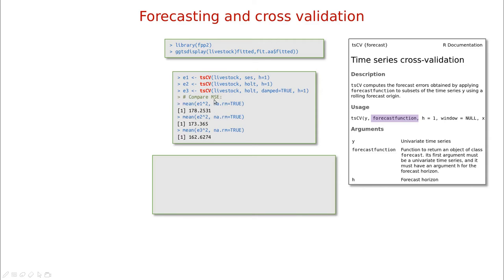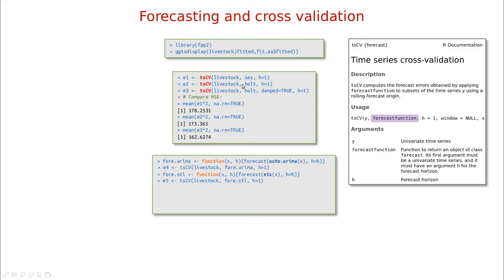Now we can calculate the mean square error — take the mean value of this function removing all the NAs. You can see that according to this method, probably the Holt method with the damped correction is the best. What if we want to try auto ARIMA or some more advanced ETS decomposition method? In that case, we have to build our own forecast function.